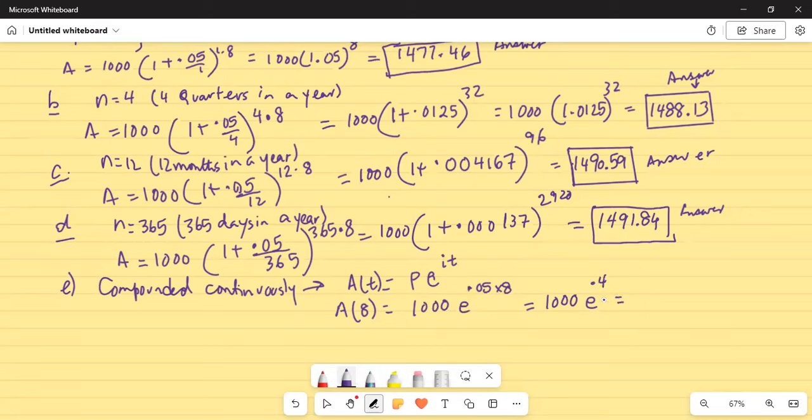So this is equal to 1,000 multiplied by the natural number E raised to the power of 0.4. And that is equal to, so in most calculators, if you, there's an E function, so second and ln, in my case, will give me E function, and that is 0.4 exponent. So natural number 2.718 raised to the power of 0.4 multiplied by 1,000. And that is $1491.82. So the best bet is to compound the money continuously. Then you get an exponential growth. This is the answer.